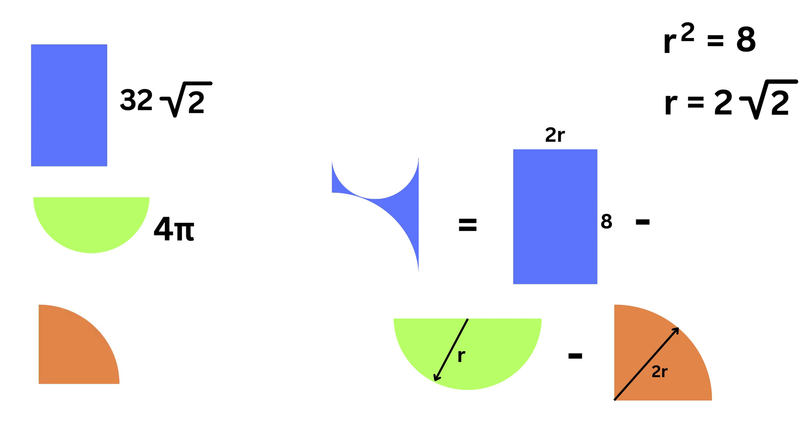Then the area of this quarter circle will be pi times 2r square by 4, or pi r square, which equals 8 pi.